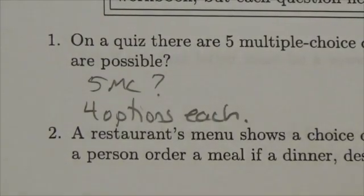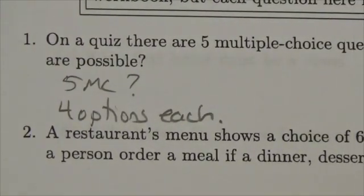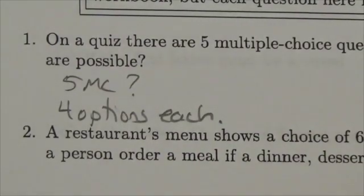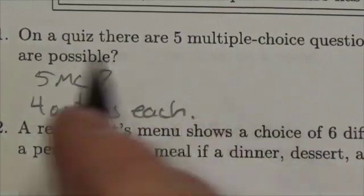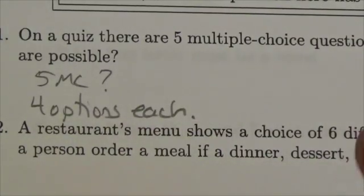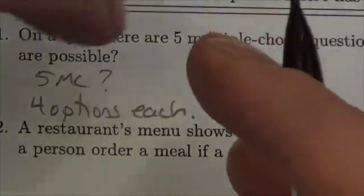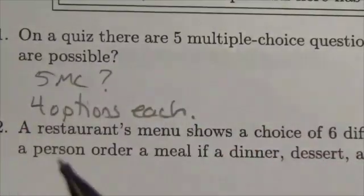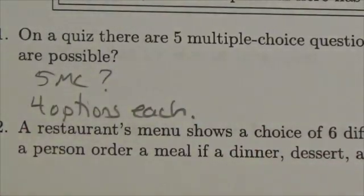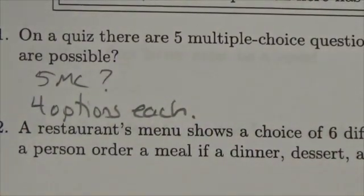We're assuming you maybe don't know what's going on and you're just randomly guessing. So how many ways can you build an answer key? We want to apply the fundamental counting principle, so we need to determine what are all the different tasks and how many ways we can accomplish each task.